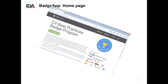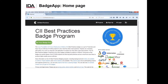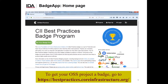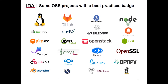If you can't remember anything else from this presentation, please remember that if you participate in an open source software project, please go to https://bestpractices.coreinfrastructure.org and start the process of getting a badge. What you see here is a quick screenshot of the homepage — you just click on the green button to get started. You can also click on the projects link to see other projects that have or are working on getting a badge. Lots of open source software projects have earned a best practices badge, including the Linux Kernel, Kubernetes, Node.js, Curl, and even OpenSSL.